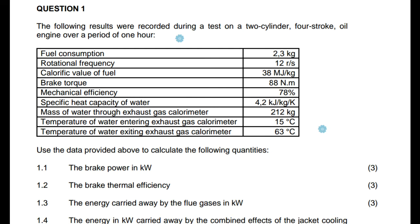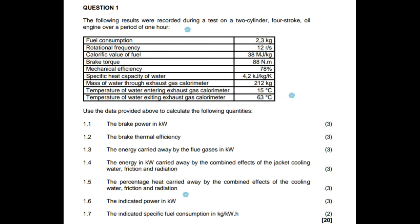1.1: The brake power in kilowatts. 1.2: The brake thermal efficiency. 1.3: The energy carried away by the fuel gases in kilowatts. 1.4: The energy in kilowatts carried away by the combined effect of the jacket cooling water, friction and radiation. 1.5: The percentage heat carried away by the combined effect of the cooling water, friction and radiation. 1.6: The indicated power in kilowatts. 1.7: The indicated specific fuel consumption in kg per kilowatt-hour.